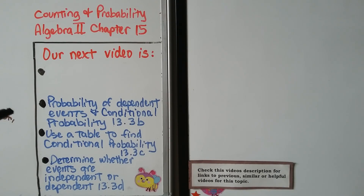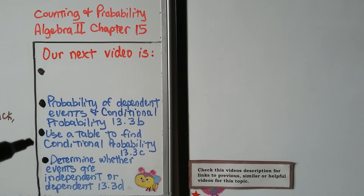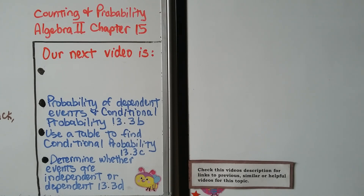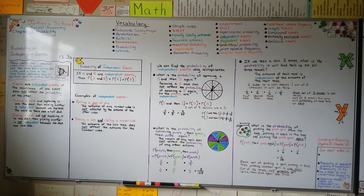We're going to continue on with 13.3b and talk about the probability of dependent events and conditional probability, use a table to find conditional probability, and end 13.3 by determining whether events are independent or dependent. If you'd like more information, there's a link to chapter 15 from Algebra 2 that covers counting and probability, including the binomial theorem, Pascal's triangle, and subsets. Check the description if you think it'll help. Hope you're having a great day — see you next time!